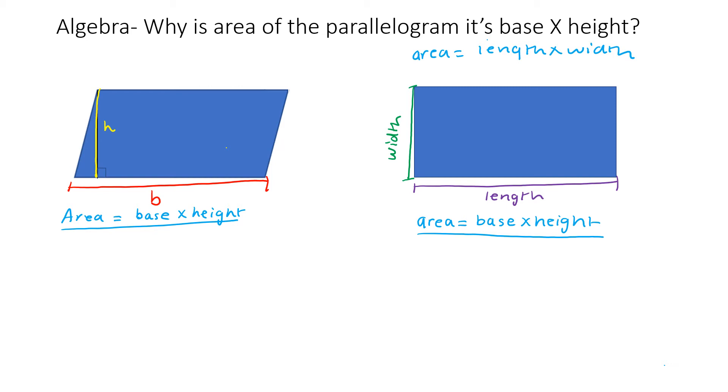Here I'm taking a piece of this parallelogram, a triangular piece, and I'm putting it on the left side of the parallelogram. As you can see, when I take that triangular piece of the parallelogram and put it at the left side, it forms a rectangle. This proves that the area of a parallelogram is equal to the area of a rectangle if their base and height are the same.